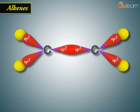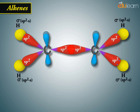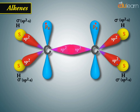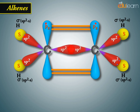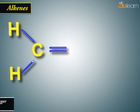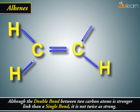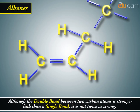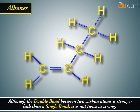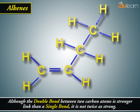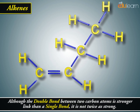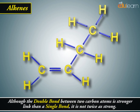Alkenes display weak dipole-dipole interactions due to the electron-attracting sp2 carbon. Although the double bond between two carbon atoms is a stronger link than a single bond, it is not twice as strong.